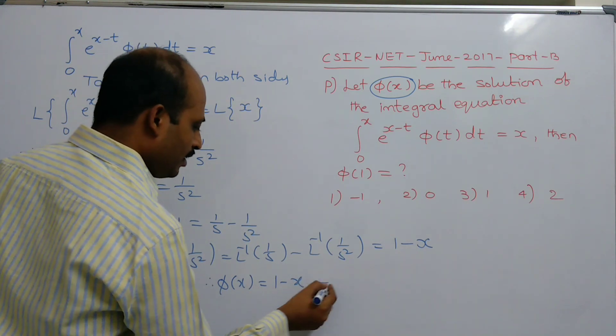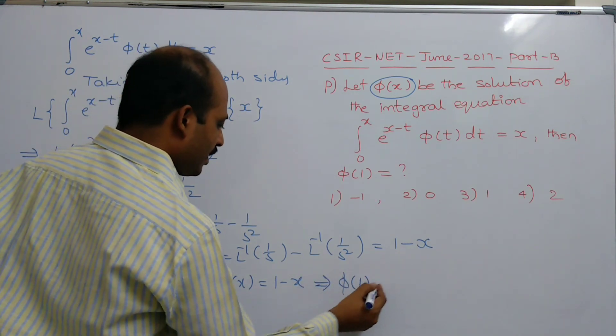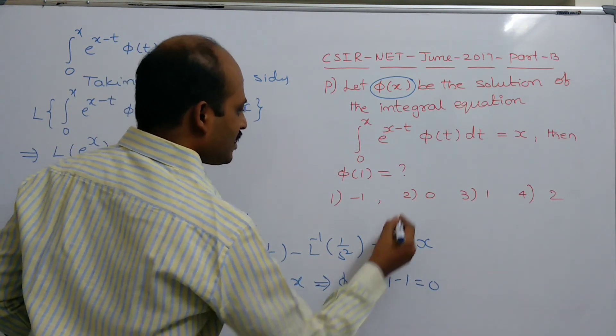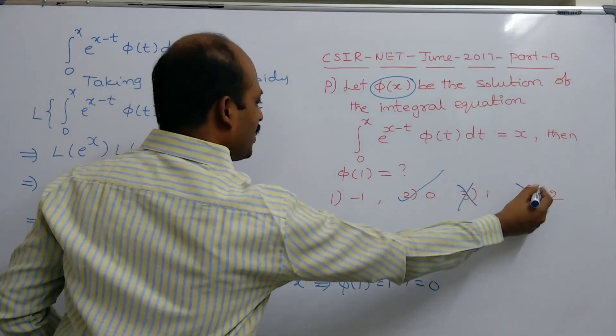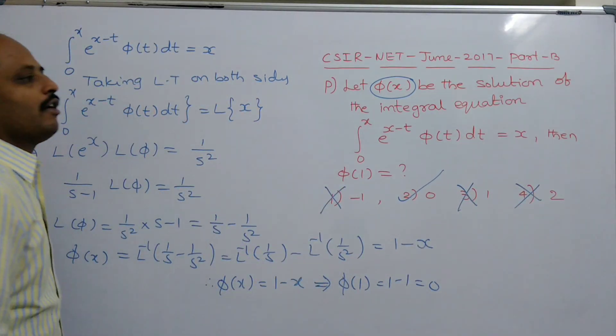You have to find φ of 1. Very simple. φ of 1 equals 1 minus 1, which is 0. Second option is the correct one. The remaining options are wrong.